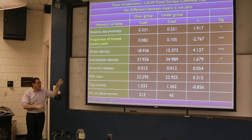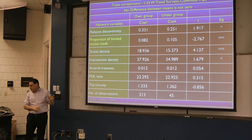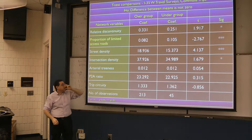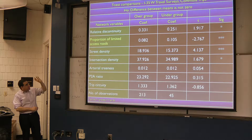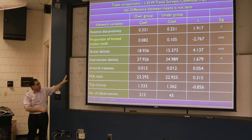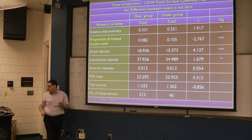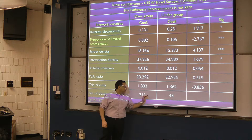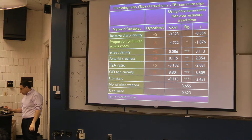We replicated this on a completely different behavioral dataset — the 2008 surveys — and got very similar results. In this case, the proportion of limited access roadways comes out significant and negative. We get the same basic pattern: discontinuity is higher, street density is higher, and intersection density is higher for overestimators versus underestimators. It's a smaller sample, but we see the same basic ratio of about 2.25 to 45 overestimators versus underestimators.